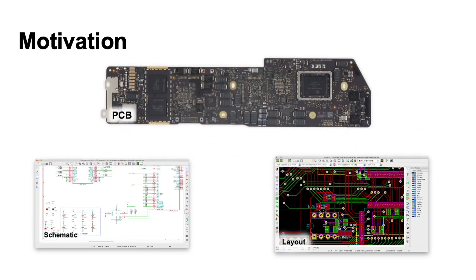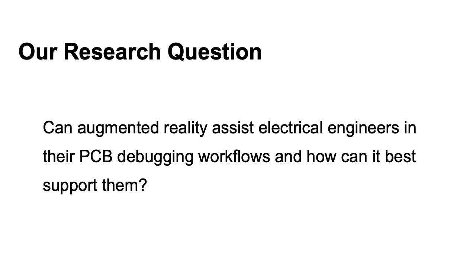During the process of debugging a new PCB design, electrical engineers must constantly move between the circuit diagrams and board layout diagrams on their computer and the physical circuit board on the desk in front of them, in order to validate their design and understand the nature of a design failure. Augmented reality has been cited as an effective paradigm for reducing this overhead of tasks with repeated context switching, particularly those with spatial associations, like the ones engineers must do during PCB debugging. So that brings us to our central research question: can augmented reality assist electrical engineers in their PCB debugging workflows, and how can it best support them?